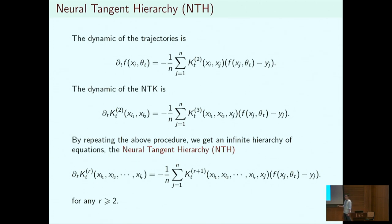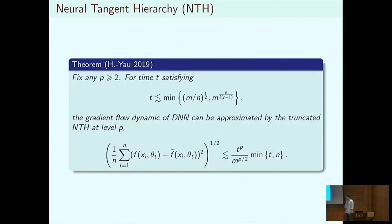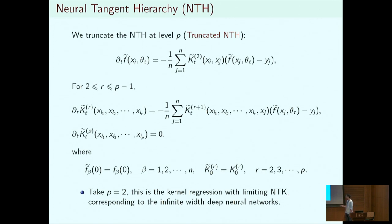The neural tangent hierarchy is simply a bunch of relations — not really useful by itself. But we can approximate this infinite hierarchy by the first p coupled equations, truncating it at some level p. This truncated neural tangent hierarchy copies the first p−1 equations and simply sets the derivative of the p-th kernel to zero, using the same initial data as the neural network. If p equals 2, this is essentially equivalent to saying K_t does not change along training, recovering kernel regression for the infinite width network. Intuitively, truncating at a larger level gives a better approximation.